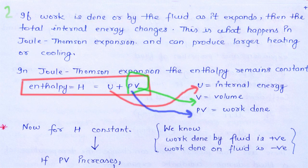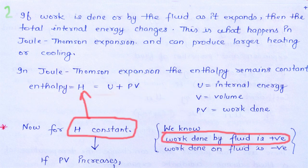Joule-Thompson expansion के अंदर enthalpy हमेशा constant रहती है। Enthalpy की equation है: h = u + pv, जहाँ h enthalpy है, u internal energy है, v volume है, और pv work done है क्योंकि p pressure है। अगर h constant है तो दो conditions होंगी।